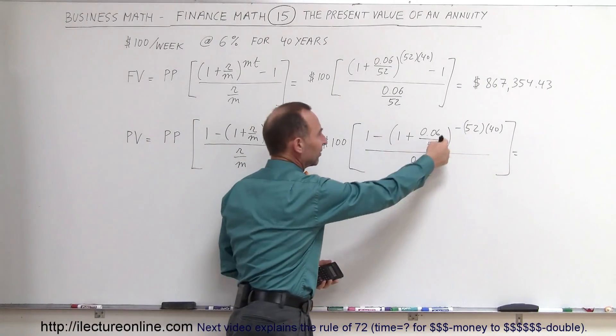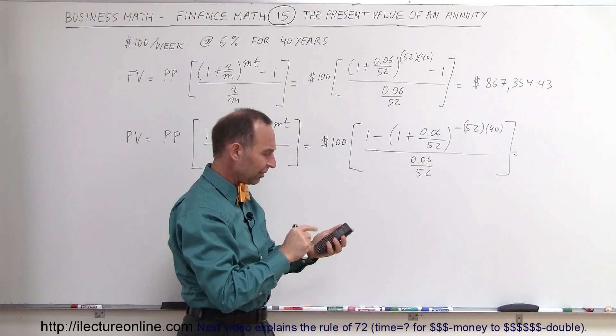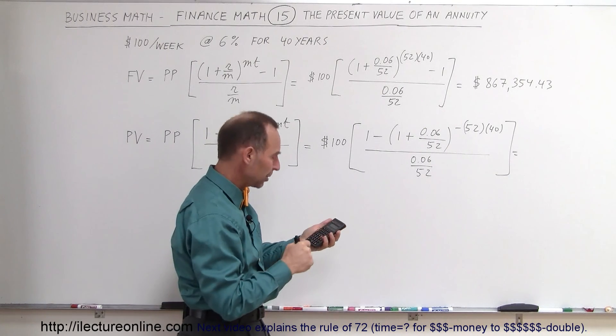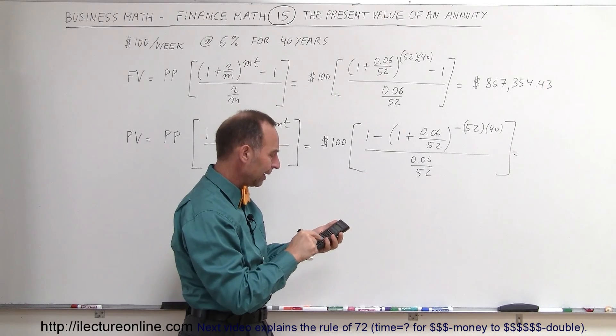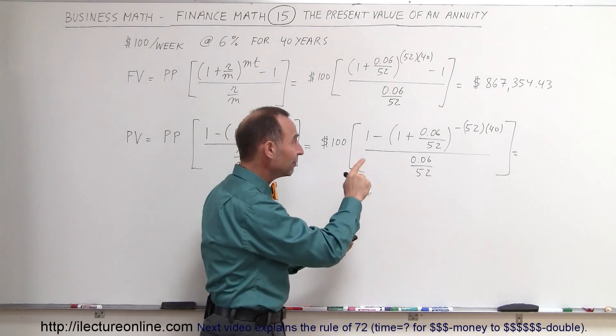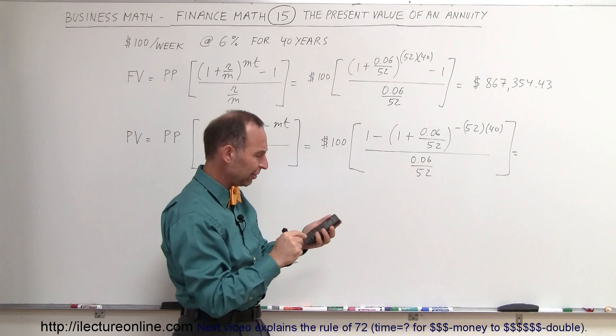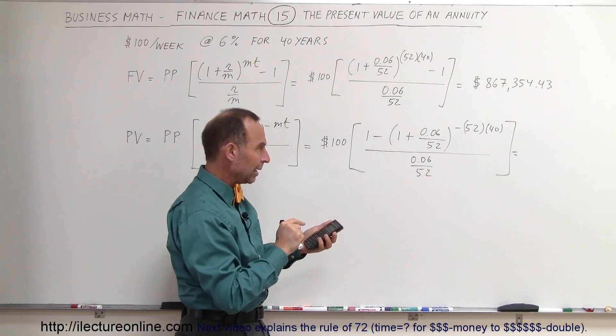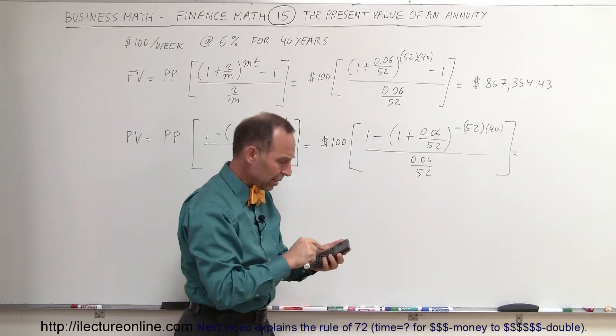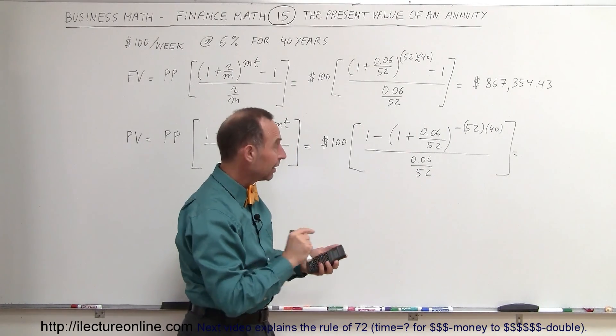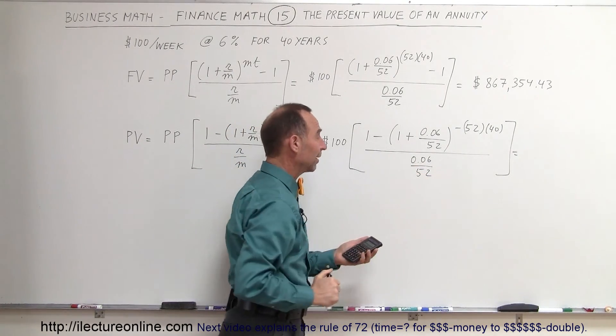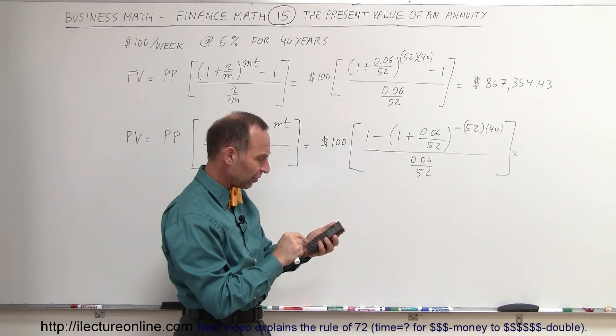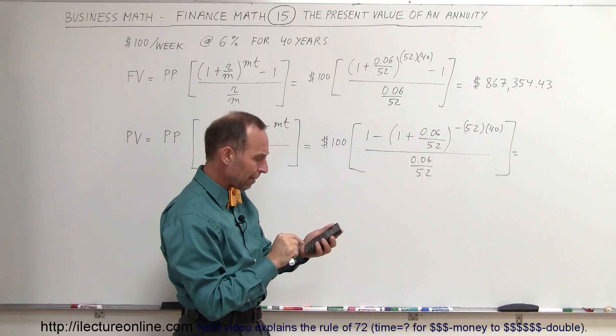Starting from the inside here, we take 0.06, that's the interest rate, divided by 52 because it's 52 conversions per year. We add 1 to that and raise it to the 52 times 40, but it's a negative, so 52 times a negative 40. We subtract that from 1, then we divide it by 0.06 divided by 52. That's the same as multiplying times 52 and dividing it by 0.06, and then multiplying by 100.